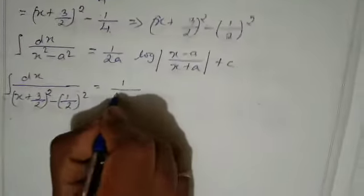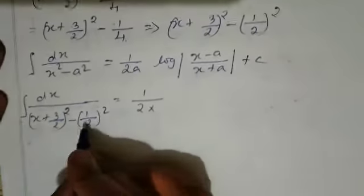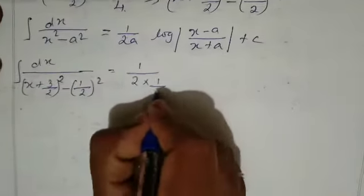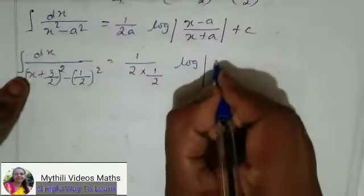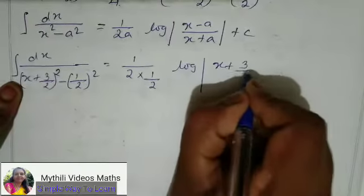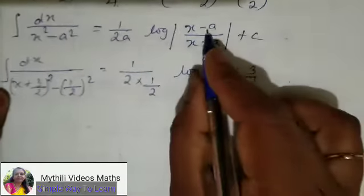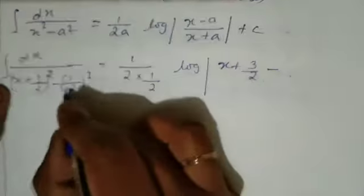This is 1 divided by 2 into a. A term is 1 by 2, just write 1 by 2 log of modulus x. So we have to write x plus 3 by 2 and then minus a, so minus 1 by 2.